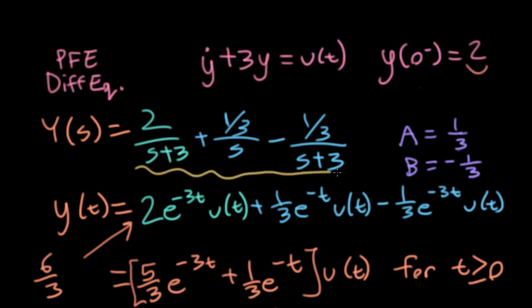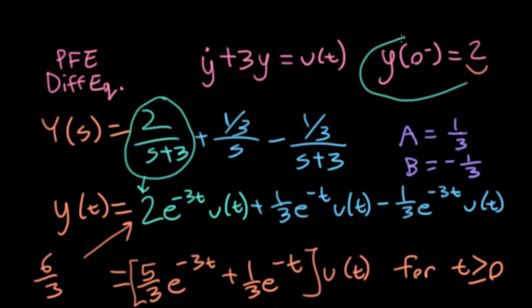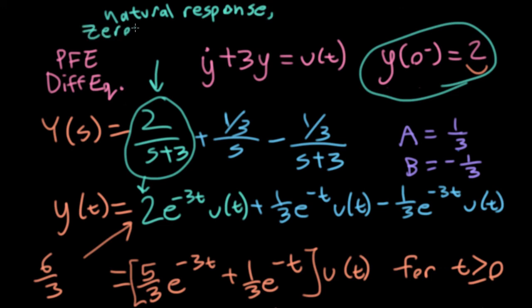Now, if you trace the various terms in our intermediate answers back to the original problem, you'll see that you can put some interpretations on these various terms. This term with the two in it came from the initial condition. So those kinds of terms are referred to as either the natural response, or sometimes you'll see them referred to as the zero input response.